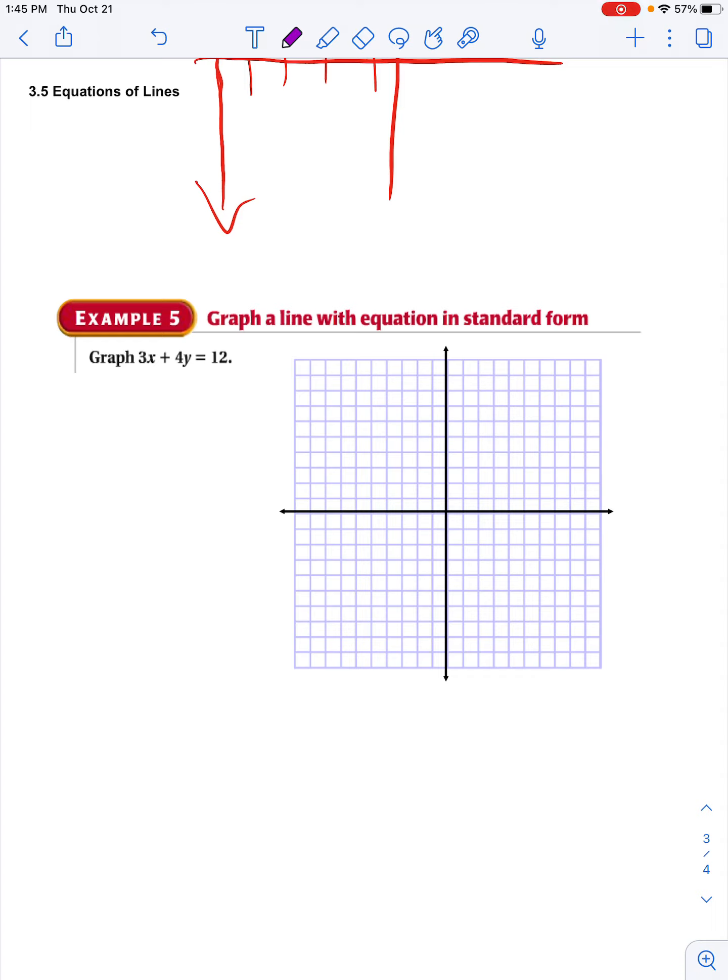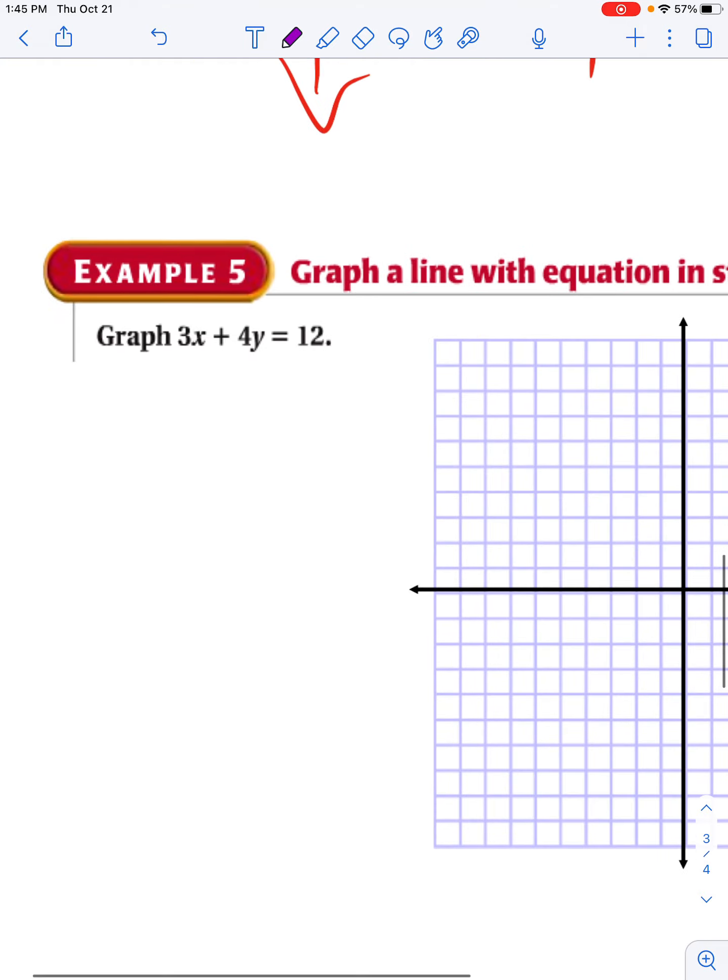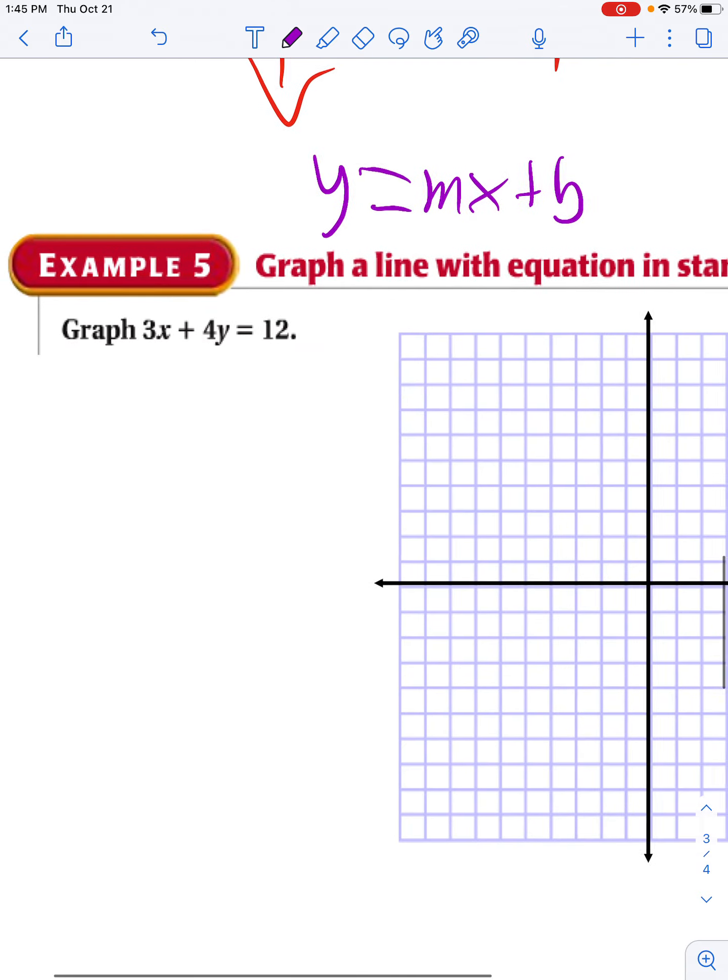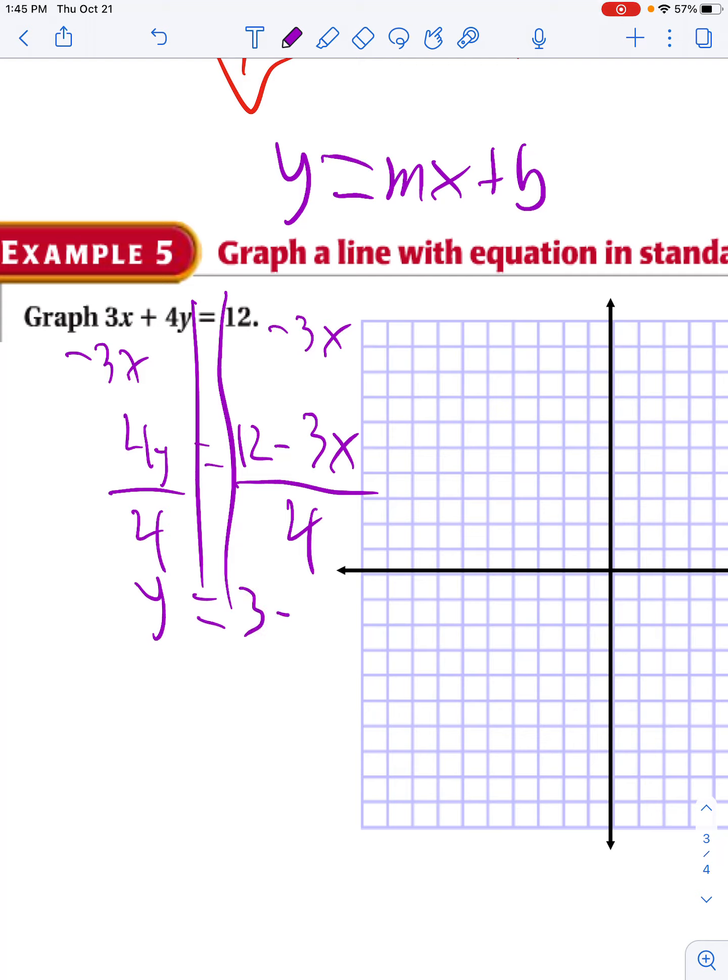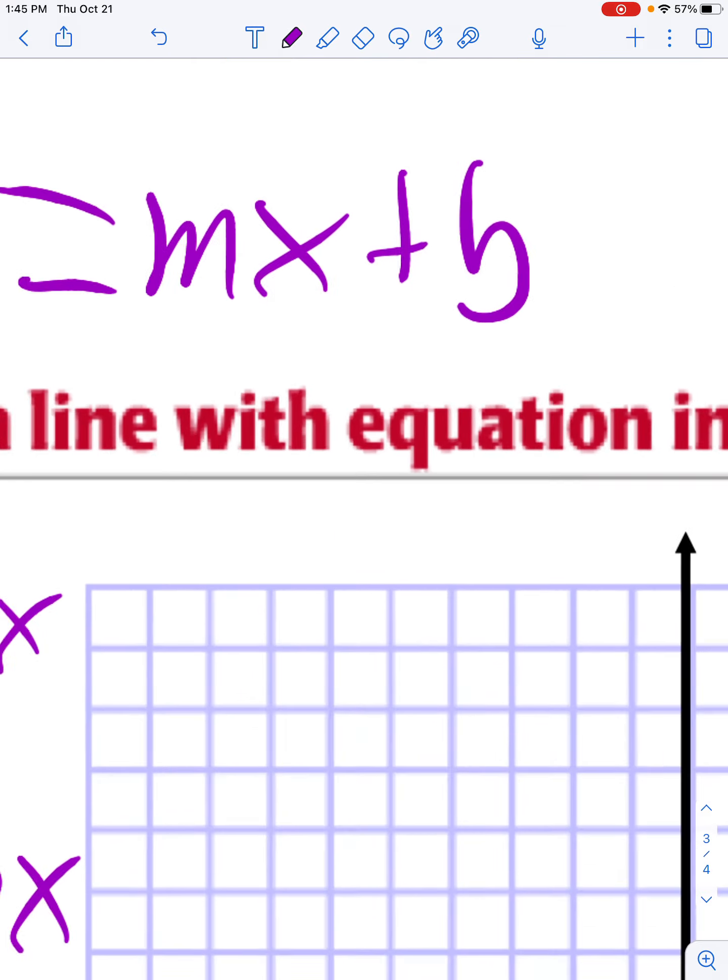Last example, graphing the equation in standard form. So in order to do that, I've got to get it into Y equals MX plus B form. It's hard for me to graph in standard form, so I'm going to manipulate it. So the first thing I'm going to do is I'm going to move my X to the other side. So I have 4Y equals 12 minus 3X. Then I'm going to divide both sides by 4. So I'm going to get Y equals 12 divided by 4 is 3. Negative 3 divided by 4X.